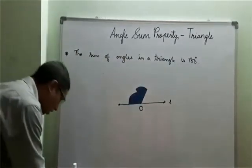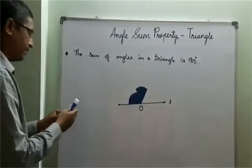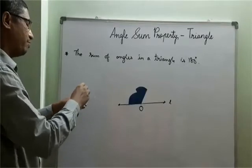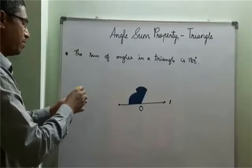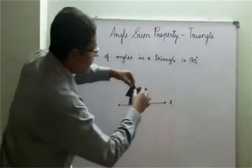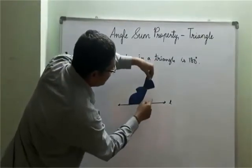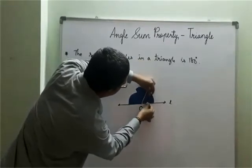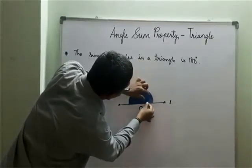I need to now go for the third angle. Again we are going to paste it in the same manner. So now see, one edge this side, the other edge on the horizontal line, so it should coincide.